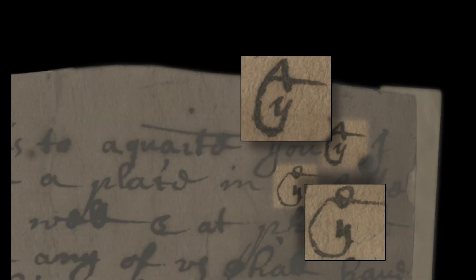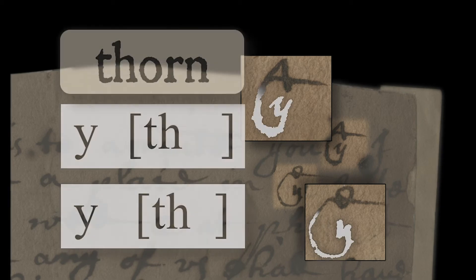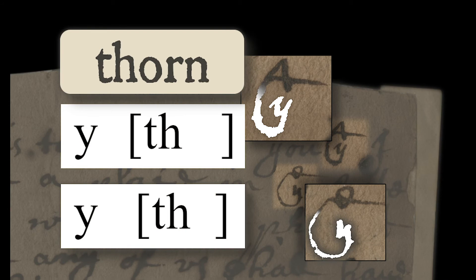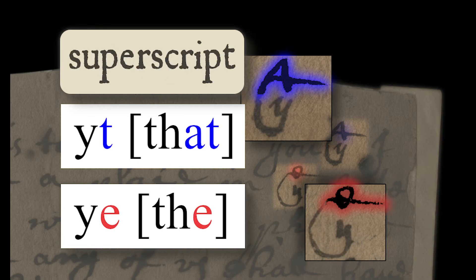Common throughout the letters are abbreviations of 'the' and 'that'. They consist of two parts: a thorn, which appears as a modern Y but represents a TH, and a superscript letter — usually an E or T — that determines the word's meaning.